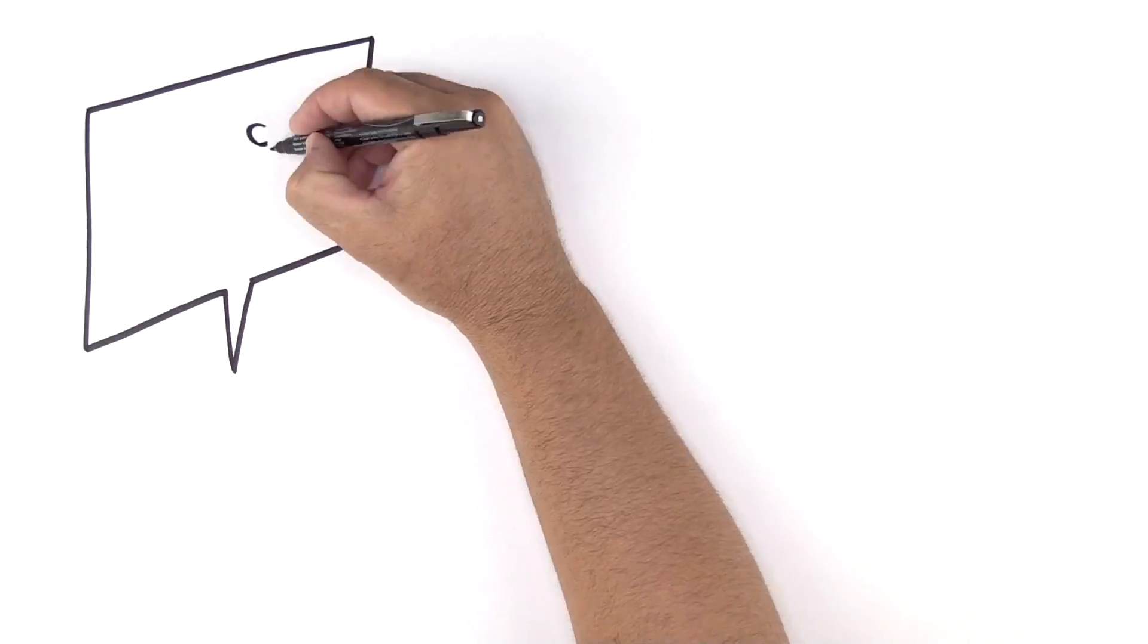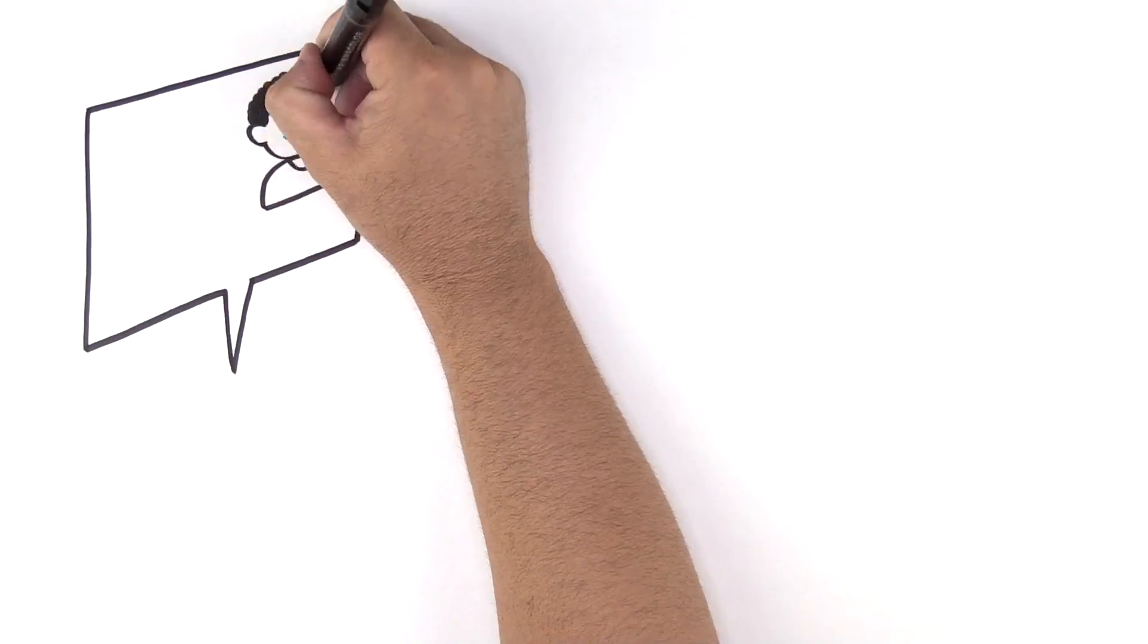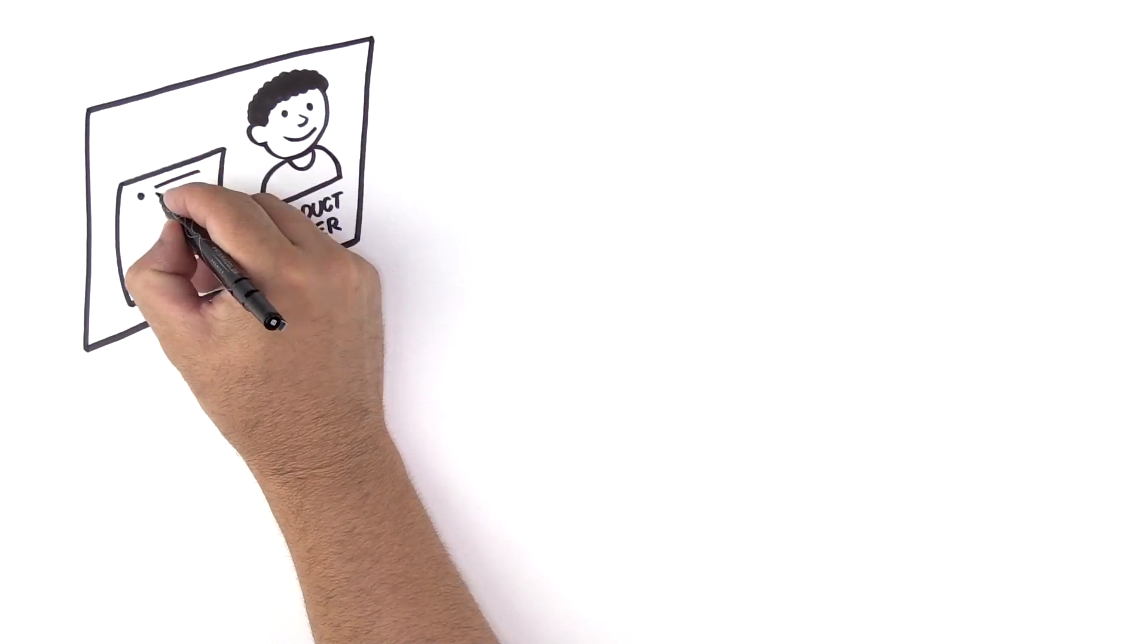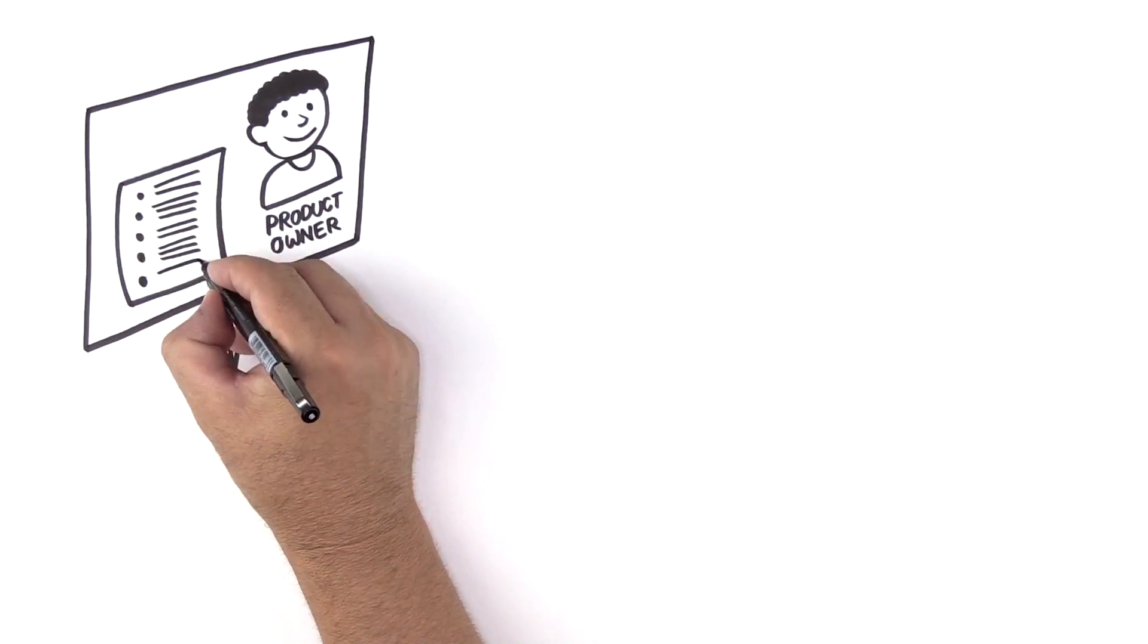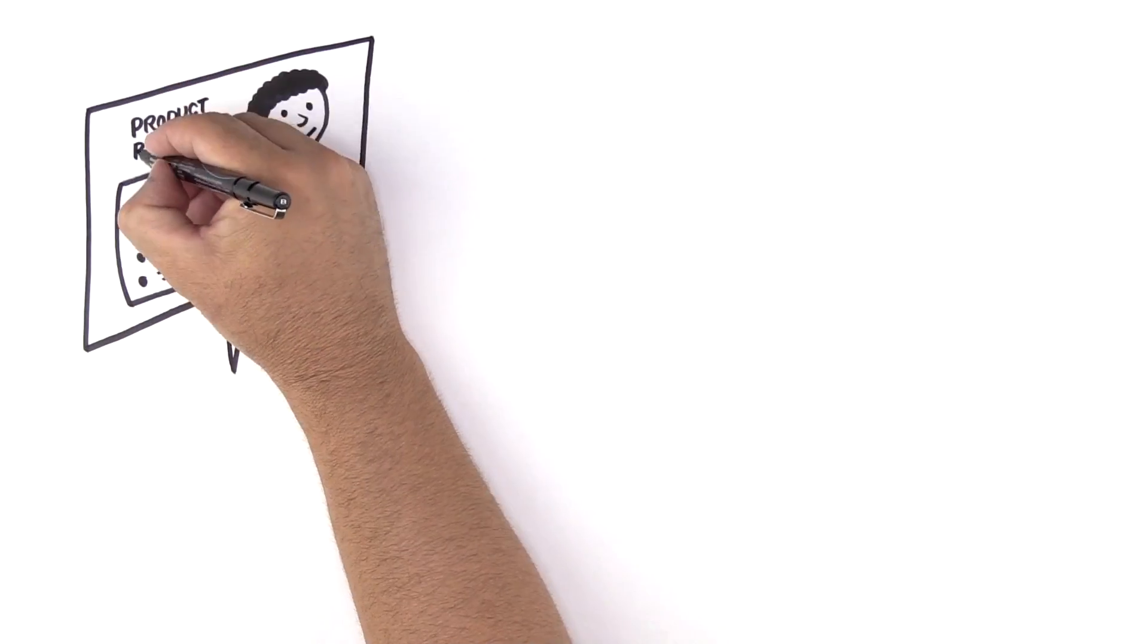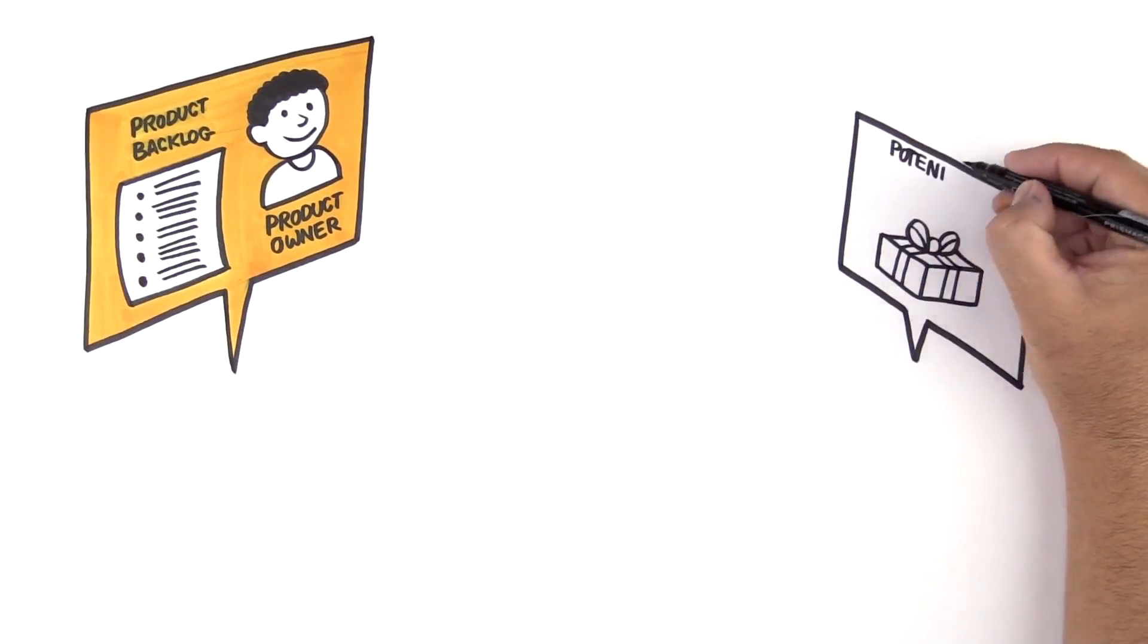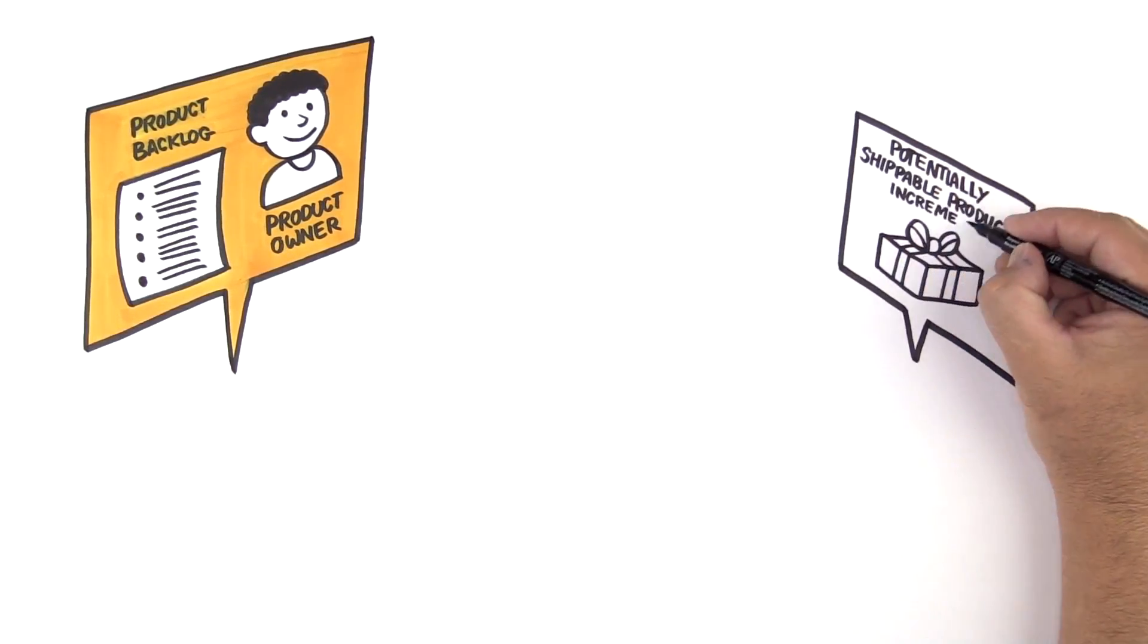How does LeSS work? LeSS is multi-team Scrum. There's one Product Owner providing vision and one adjustable prioritized list of customer-centric items—the Product Backlog. We want one integrated shippable product increment every sprint, every one to four weeks.